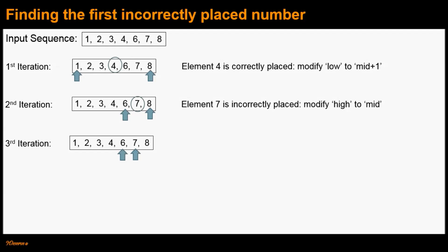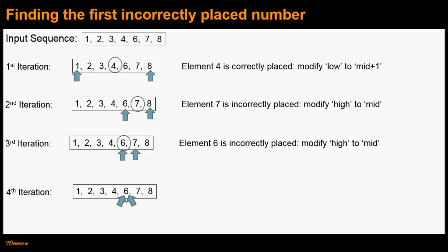That leads to our third iteration, where the low index points to element 6 and the high index points to element 7. The mid element is evaluated to element 6. We check if element 6 is correctly placed — it is not. Using the same argument from the second iteration, we modify the high index to the mid index. That leads to our fourth iteration, where both low and high indices are pointing to element 6.